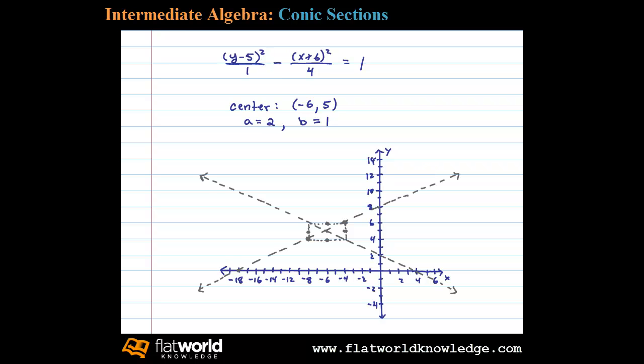Since this is a hyperbola opening upward and downward, the vertices will be at (-6, 6) and (-6, 4). We want to draw our hyperbola through those points and asymptotic to these asymptotes. And there we have it—a rough sketch of the given hyperbola.